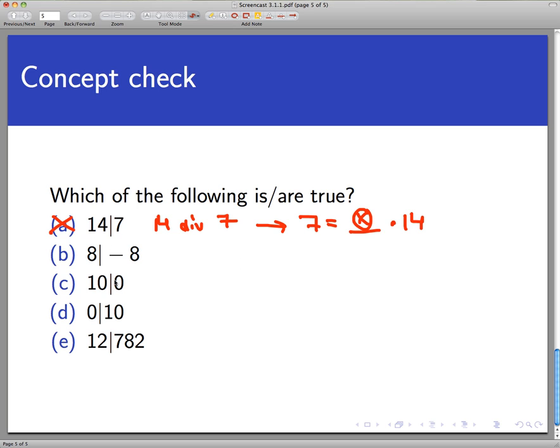8 does divide -8. Why? Because I can take -8 and write it as some integer times 8. Namely, I could put an integer -1 into that blank. So this is good. 10 does divide 0. We've seen a couple of examples of that already. Because I could take this equation, set it up, and put an integer in this blank, namely 0. This is not correct because 0 does not divide anything.